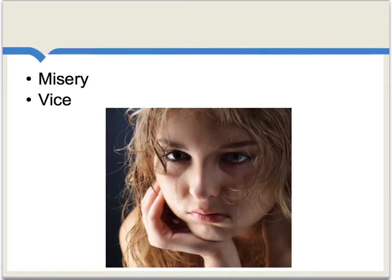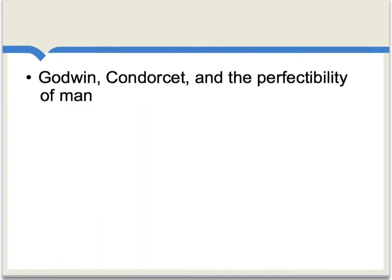Malthus is often portrayed as a theorist of population, and of course that's correct, but I think of him as obsessed with two different but closely related concepts: misery and vice, to use his own words. Malthus was concerned with combating ideas of his time associated with Godwin and Condorcet — ideas related to the perfectibility of man and the ability to create some kind of utopia here on Earth. Malthus was skeptical. He was trying to explain why misery and vice are something mankind can never get away from. Note that Malthus was himself a reverend, and you can read him as arguing against some of the more secular thinkers of his time.